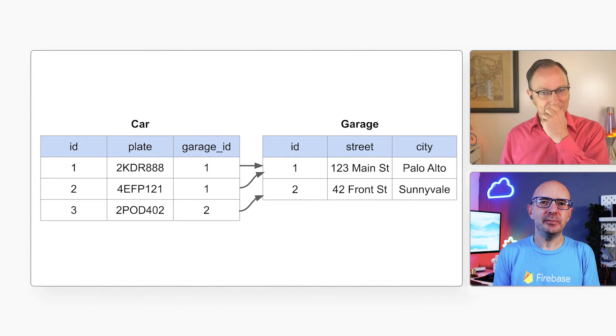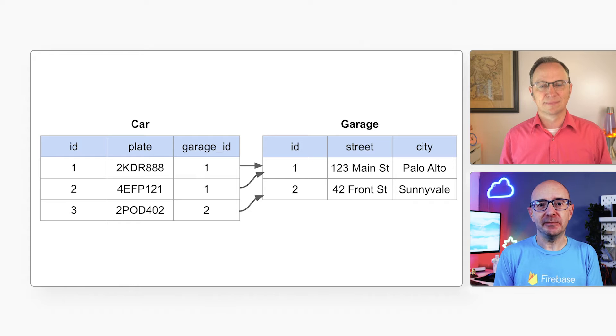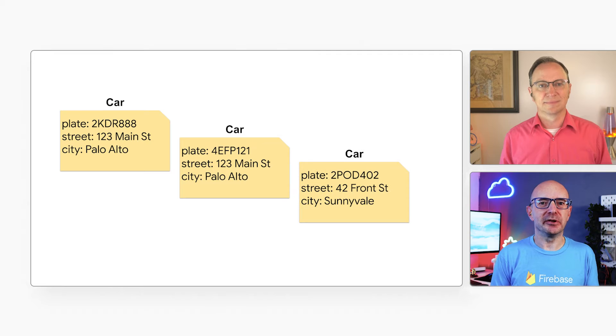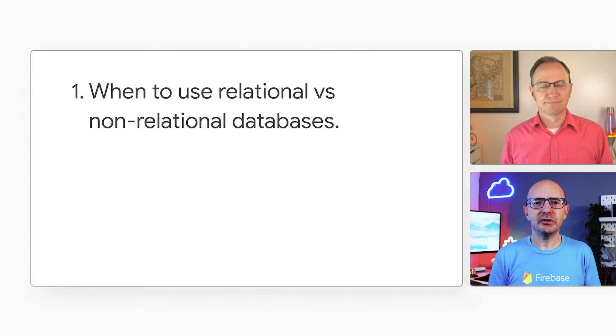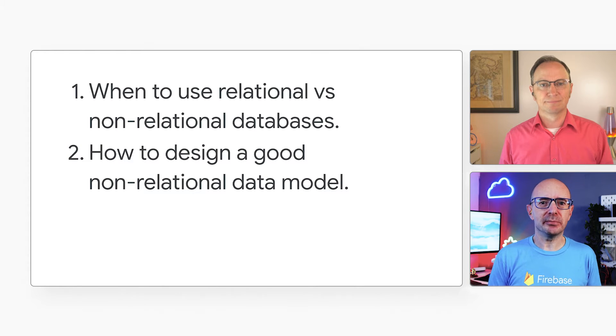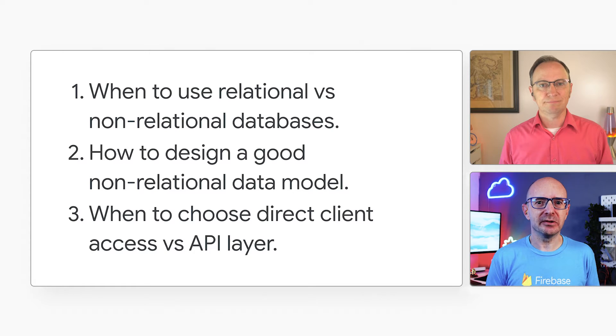Well, with the web, we needed a way to build more scalable applications. Non-relational databases filled that need. These databases store data in documents. Applications only need to read a single document for each entity, which puts less load on the server. So these databases can handle a lot of traffic. Now, you've used non-relational databases in production on some major projects, right? Right, and I've used them for everything from simple mobile applications to large enterprise IoT projects consuming tens of millions of events per day. What lessons have you learned? It comes down to three architecture decisions: when to use relational versus non-relational databases, how to design a good non-relational data model, and when to choose direct client access versus an API layer.